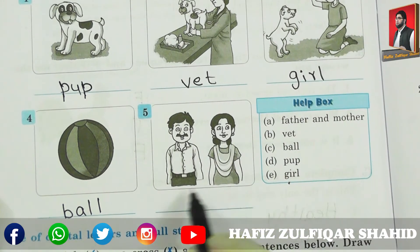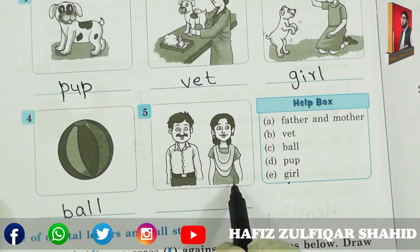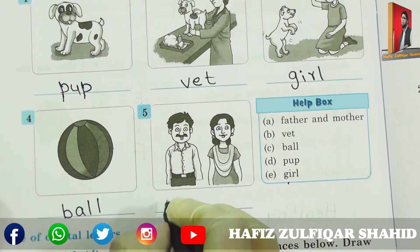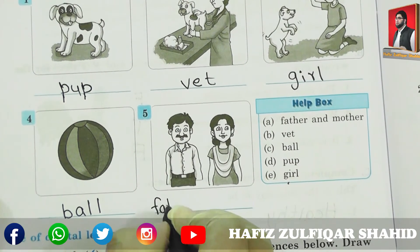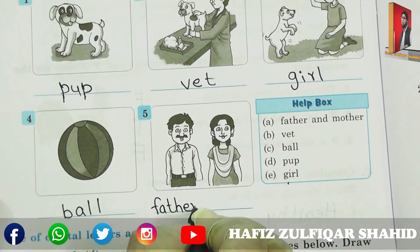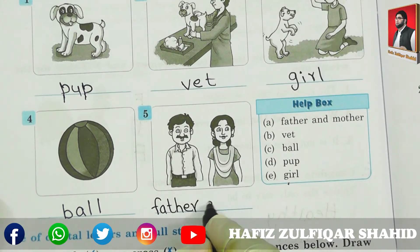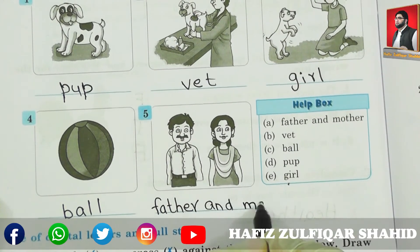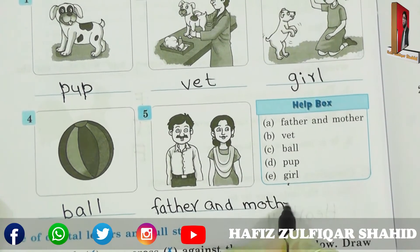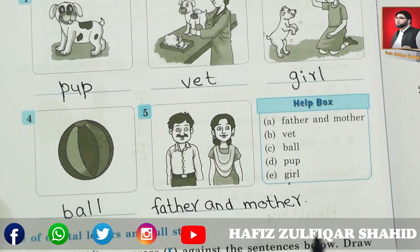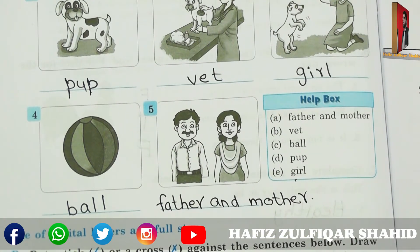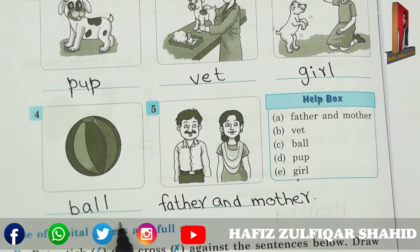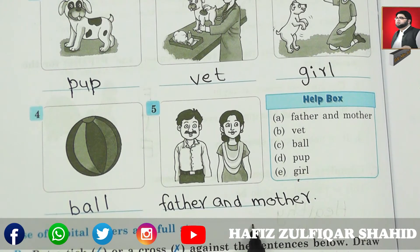Now the last one — who is this? Father and Mother. So let's write: FATHER AND MOTHER. Yes, here we have finished this one. The answers are: pup, vet, girl, ball, father and mother.